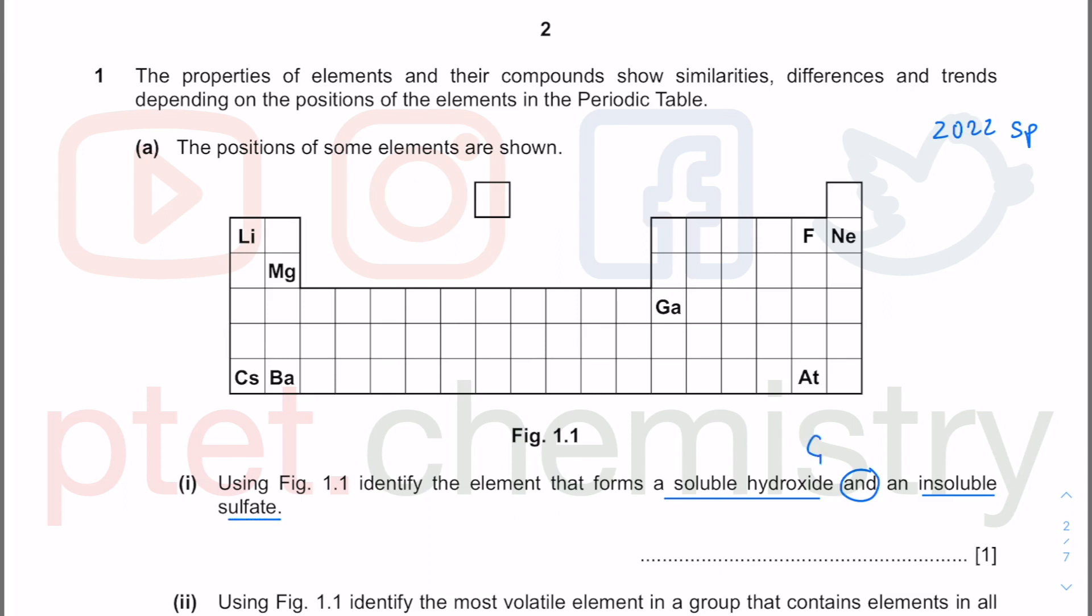This is to do with the group 2 chemistry in the AS curriculum. As you know, the group 2 hydroxides become more soluble down the group. So we know that barium hydroxide is very soluble with a very basic solution around pH 13, pH 14. But we also know that barium sulfate is an insoluble white precipitate. So we're looking at barium instead of magnesium.